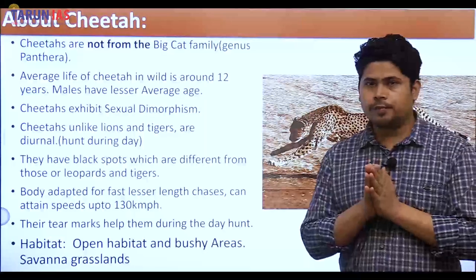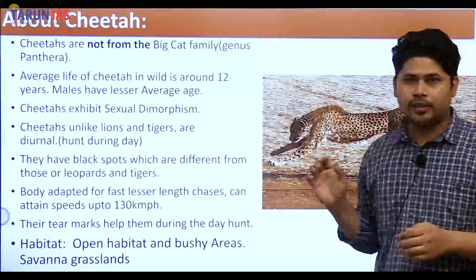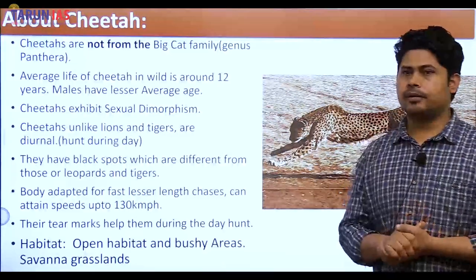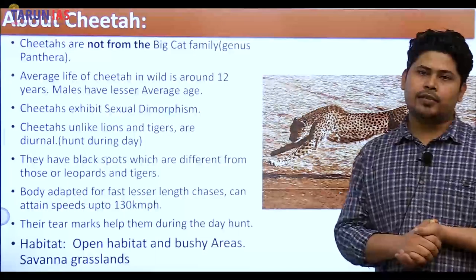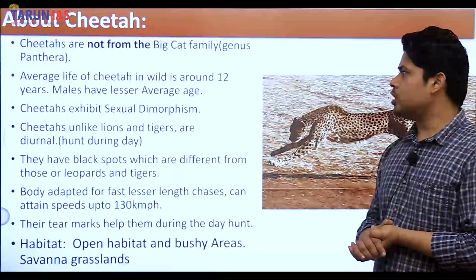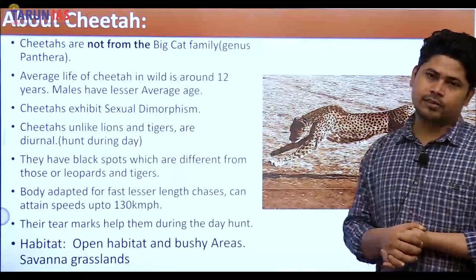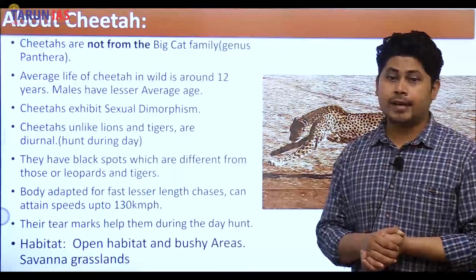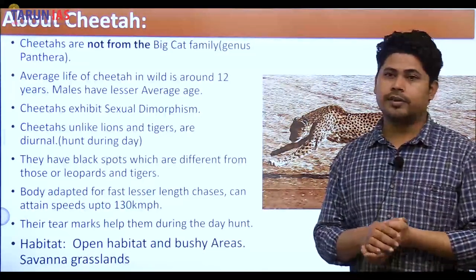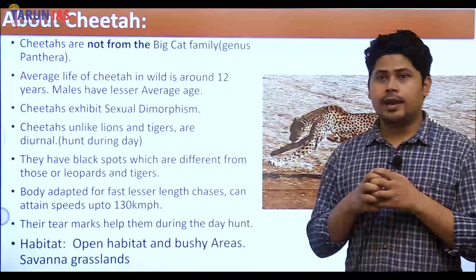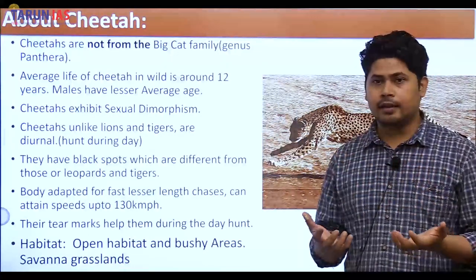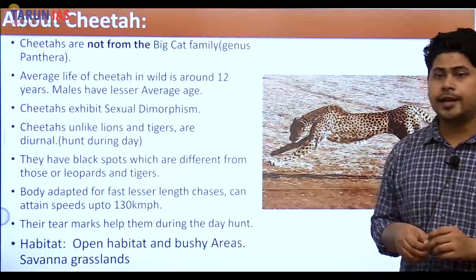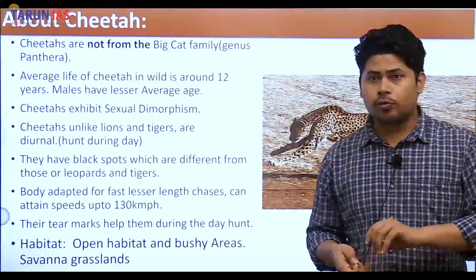Cheetahs are not from the big cat family — they are not from genus Panthera. For example, Panthera tigris is the scientific name of the tiger and Panthera leo is the scientific name of the lion. The average lifespan of a cheetah in the wild is around 12 years. Males have a lesser average age — around 8 years — because of territorial conflicts that lead to them getting killed.